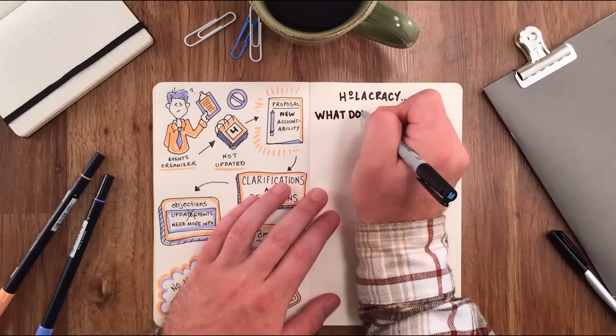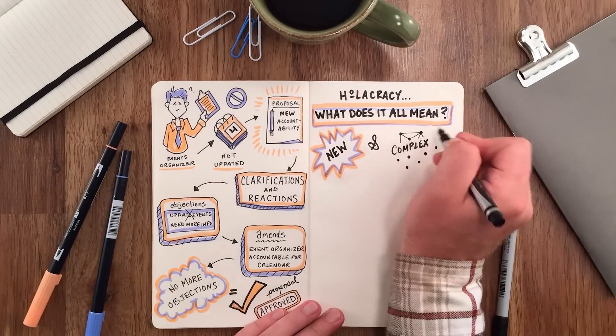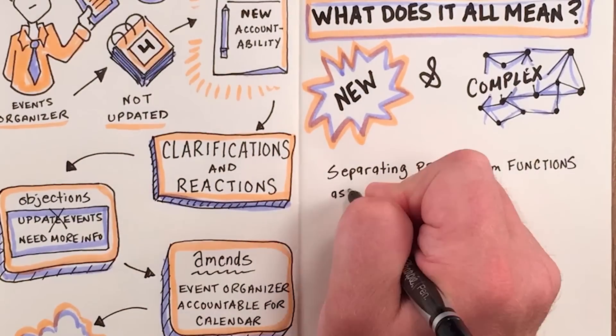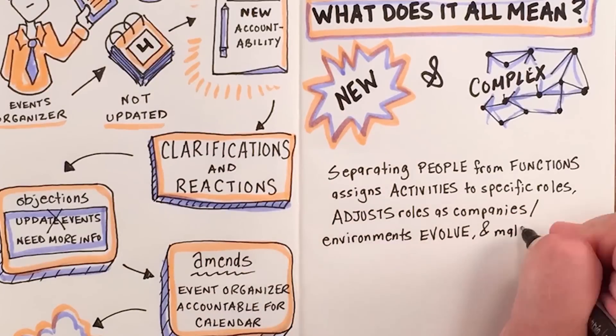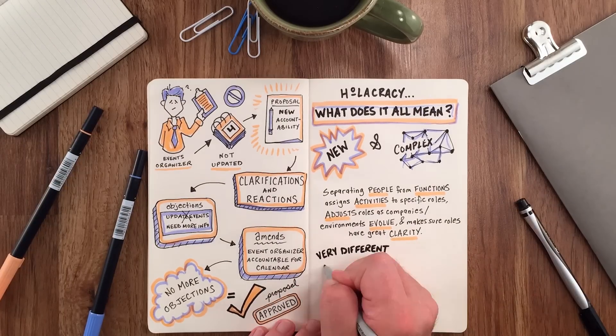What does it all mean? The Holacracy playbook is new and feels fairly complex. It starts by separating people from functions, assigns activities to specific roles, dynamically adjusts roles as companies and their environments evolve, and makes sure that roles have great clarity.